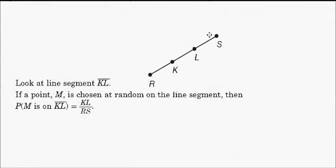So if we look here, we have a line segment, and if you look at just the line segment KL, you see that it is part of the larger segment RS. If you wanted to put a point on here randomly and call it M, it could end up here, that could be M, it could be here, that could be M, it could be anywhere on this line segment. The probability that M is on the smaller segment KL is KL divided by RS, so KL's length divided by RS's length.